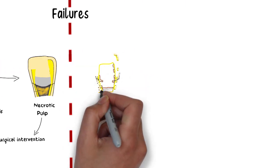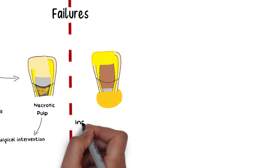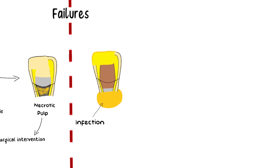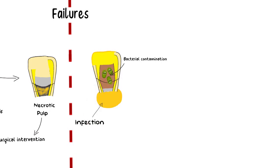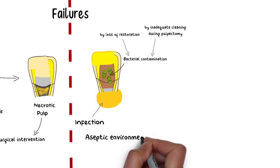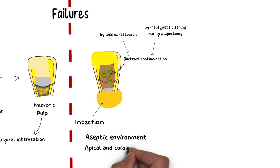Failure of Apexification will usually result in an infection being developed. The most common cause of failure of Apexification is bacterial contamination, which can be caused by loss of the coronal restoration — through which bacteria can gain access — or inadequate debridement of the canal during treatment. Hence, just like root canal treatment, an aseptic environment and establishment of both apical and coronal seals are among the most crucial factors for long-term success of Apexification.